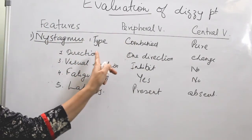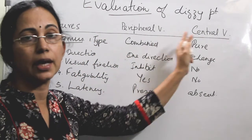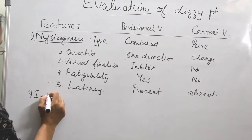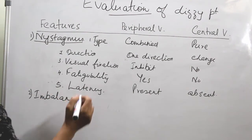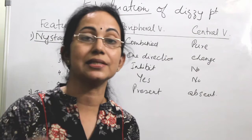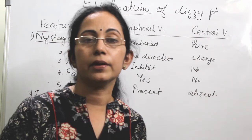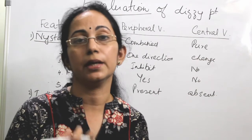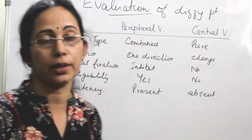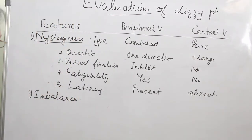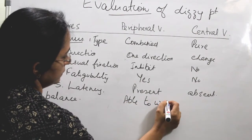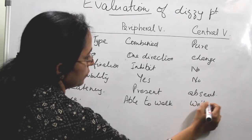Another difference is imbalance. Most often, imbalance will be associated with central vertigo. In peripheral vertigo, imbalance may or may not be there, but the patient will be able to walk. But in case of central vertigo, the patient will not be able to stand or even to walk.